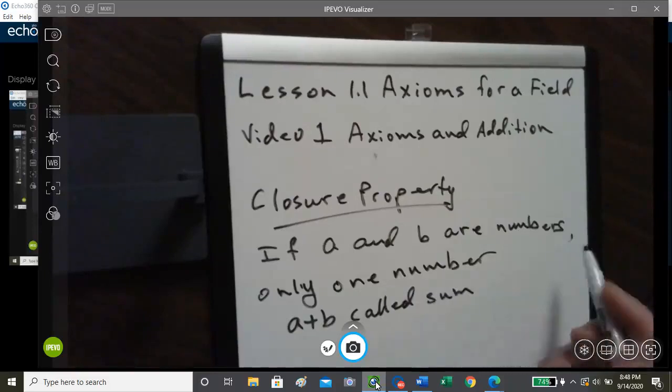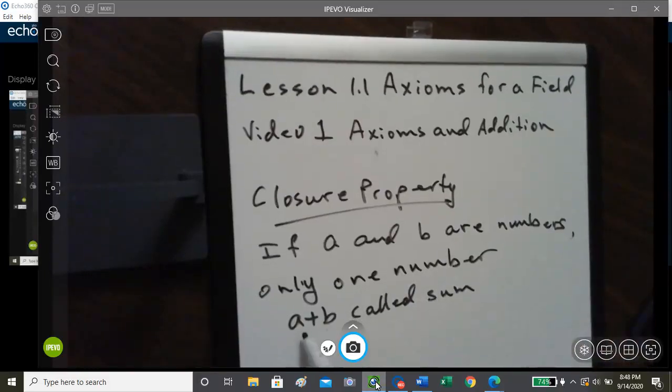So in other words, the two numbers are added, they're closed under Addition. You add two numbers together, you get a third number, which is their sum. And that's known as the closure property.